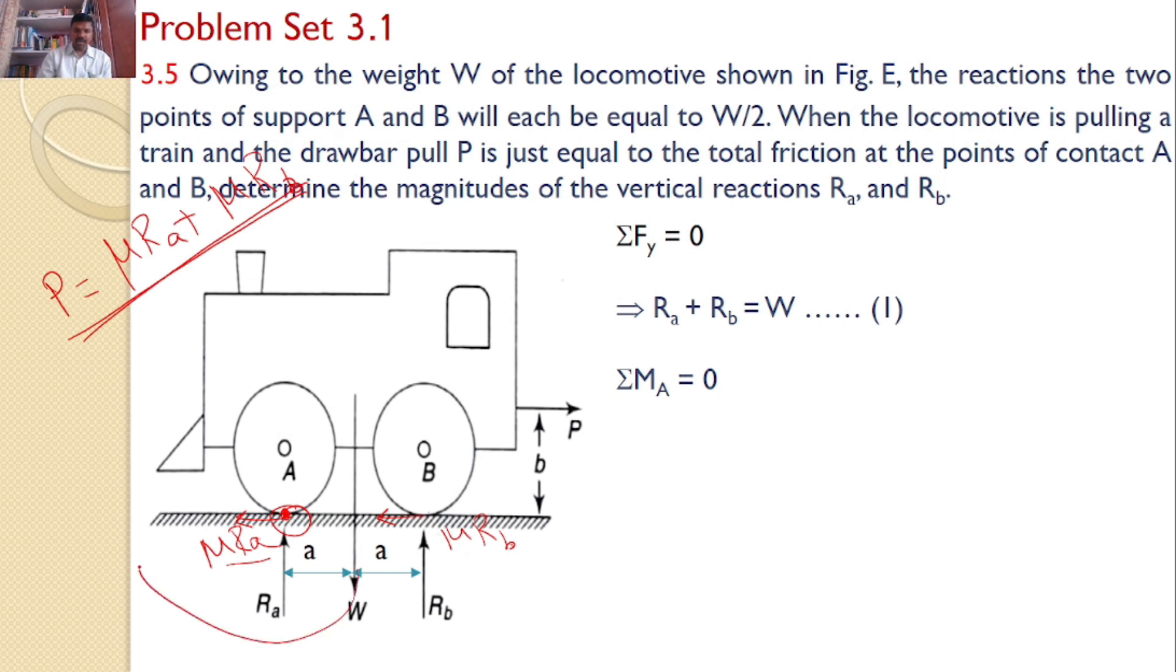So, Rb will introduce a moment in this direction because I am taking moments about point A. Rb will introduce a moment in this direction and P will introduce a moment in this direction. So, moment of W and P is in the same direction, but Rb is in the opposite direction. And also, I know the W distance is A, Rb distance is 2A, and P distance is B, perpendicular distances.